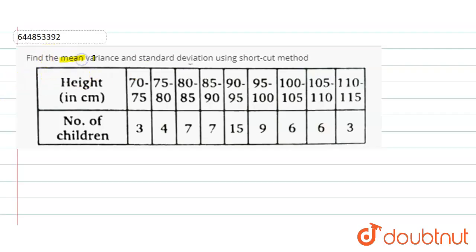Hello everyone. Today our question is: find the mean, variance, and standard deviation using the shortcut method. Here we are given the data of the height in centimeters and the number of children in the form of class intervals. So let me start.